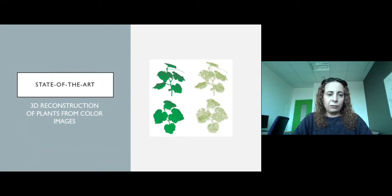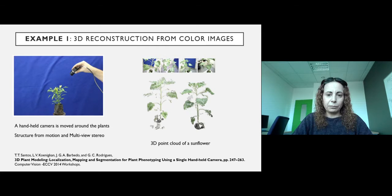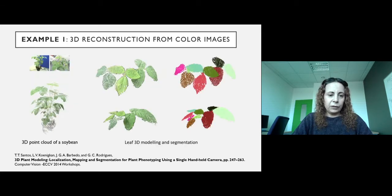I'm going to give a sense of the state-of-the-art for 3D reconstruction of plants from color images. In this example, the 3D reconstruction is implemented using a handheld camera moved around the plant. Structure from motion and multi-view stereo were used to get the point cloud from the surface of the plant. On the right you can see the 3D point cloud of sunflowers. An example of what you can do with this is to segment the individual leaves and apply 3D modeling on them.